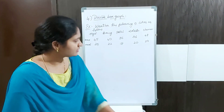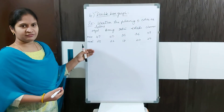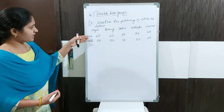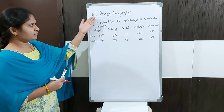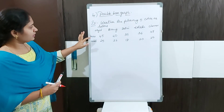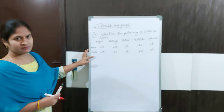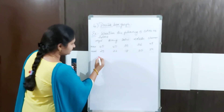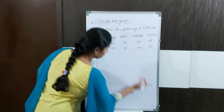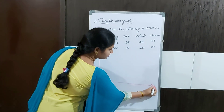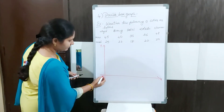How will you represent this data on a graph? On the same graph, I am representing both the maximum temperature and the minimum temperature. The horizontal axis I am taking as the x-axis and the vertical line I am taking as the y-axis.